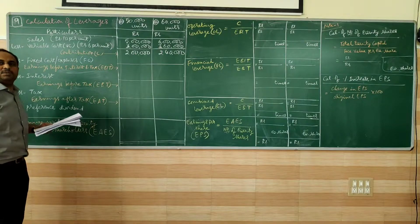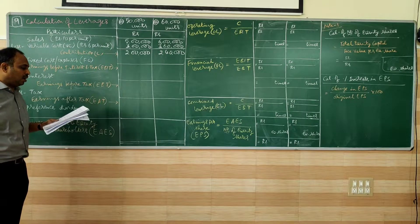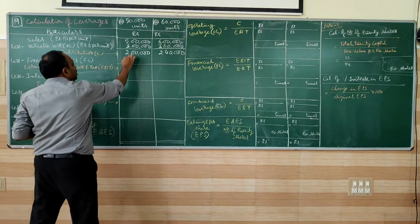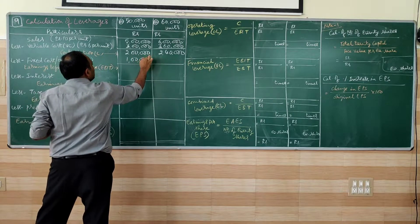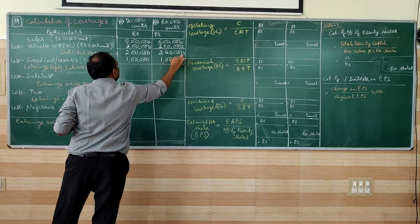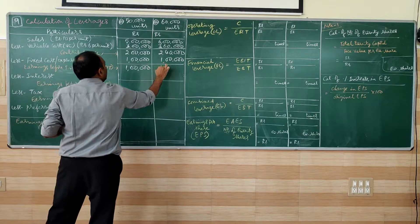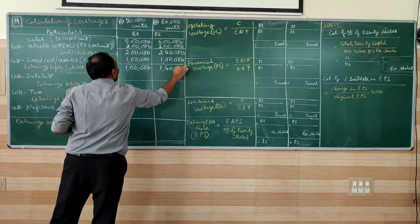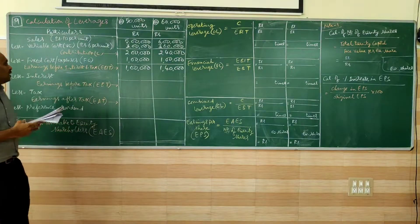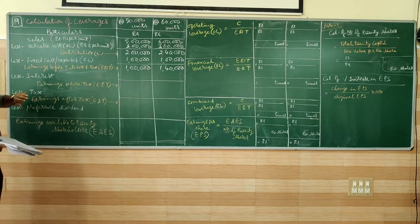We are going to get the contribution. Contribution has become 2 lakhs and 2 lakh 40,000. And fixed cost given in the problem as a deduction from contribution is 1 lakh. So EBIT is 1 lakh and 1 lakh 40,000. So EBIT we are going to account.